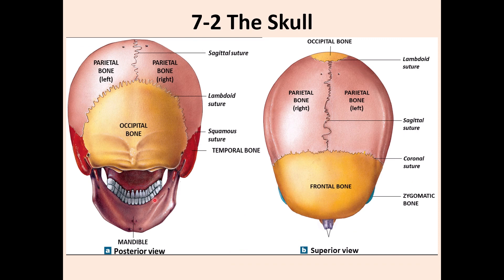From the posterior view you can see the occipital bone, which is separated from the two parietal bones by the lambdoid suture. There are two parietal bones and they are separated from each other by the sagittal suture. The sagittal plane splits the body into right and left. You can also see the mandible in the background.